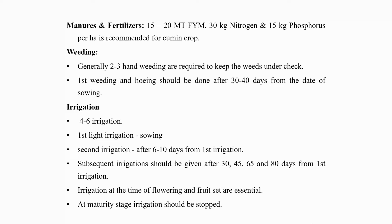The crop should be kept free from weeds for proper growth and development of plants. Generally 2 to 3 hand weedings are required to keep the weeds under check. In drilled crop, light intercultural operation is beneficial. First weeding should be done after 30 to 40 days from the date of sowing.